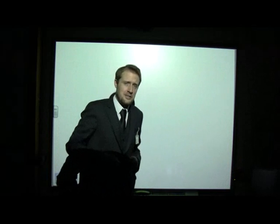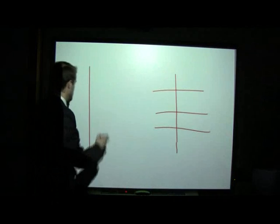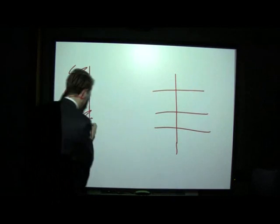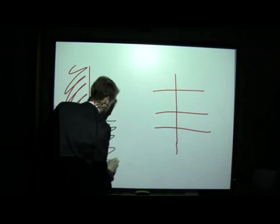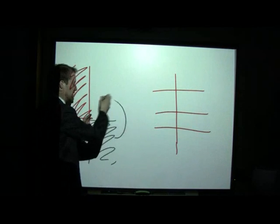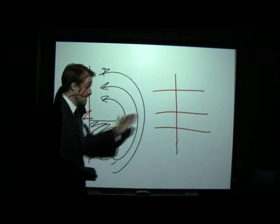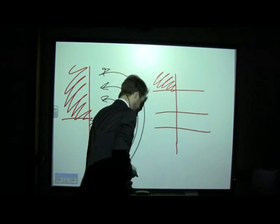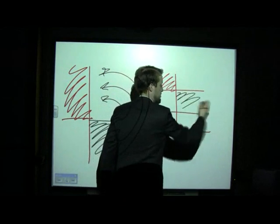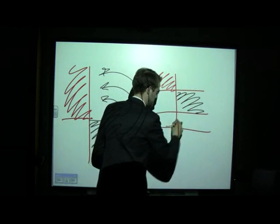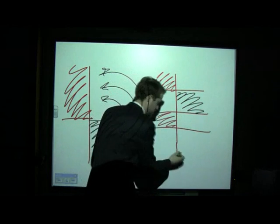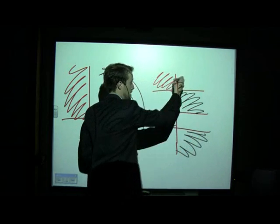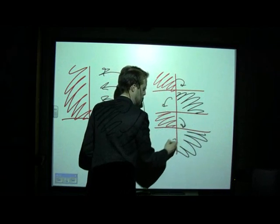If you have an essay where you're comparing two things, either choose the pinstripe or choose the check. Talk about one text and then talk about the second text, and as you talk about the second text keep making comparisons. Or you can attempt the checkered approach, which is where you talk about one text and then compare it to a bit from your second text, talk about your first text and compare it to your second text, and so on — you just keep going all the way through the essay.